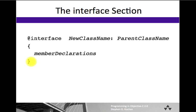After the right curly brace that closes off the instance variable declarations, we then list the methods that we want to implement for part of this class. And to close off the interface section itself, we use the @end directive.